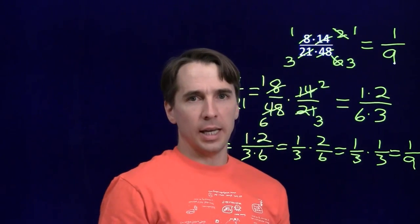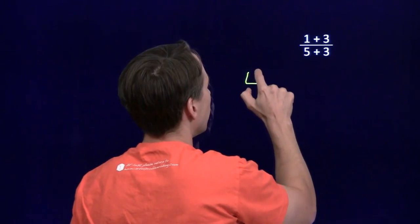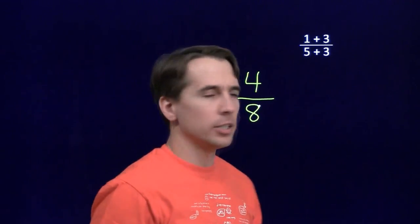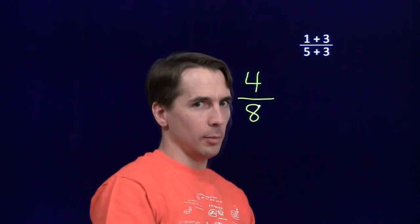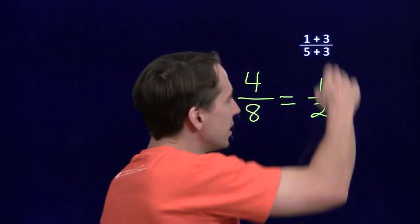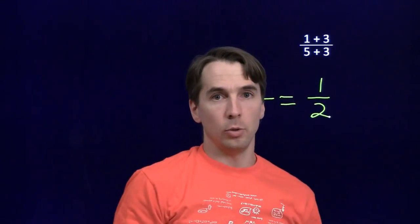Now, the reason we really want to understand canceling is so that we can understand when we can't cancel. Now, check this out. Now, I know some of you at home are thinking, cancel the 3s! 1 fifth! Cancel the 3s! Notice I didn't write that down. That's because it's wrong. Let's go ahead and compute. 1 plus 3, that's 4. 5 plus 3, that's 8. 4 over 8, you recognize that number, right? That's 1 half, not 1 fifth. You can't just erase those 3s and forget about them like we were doing with multiplication. These are sums in the numerator and the denominator.